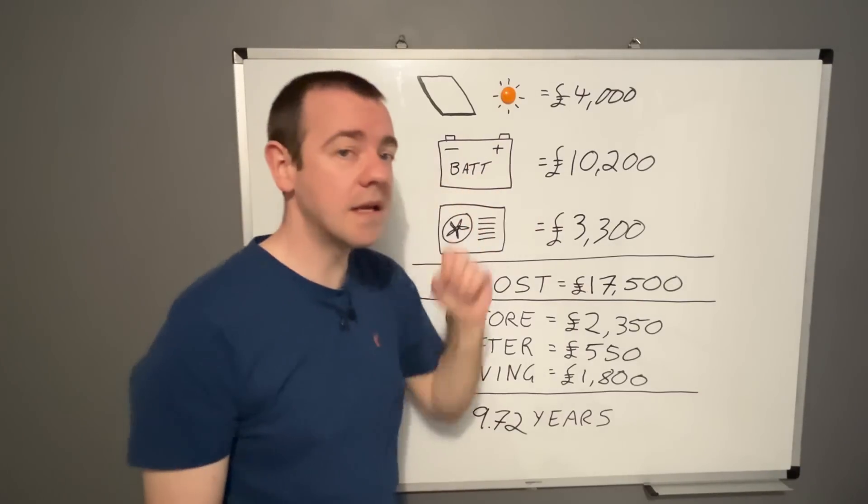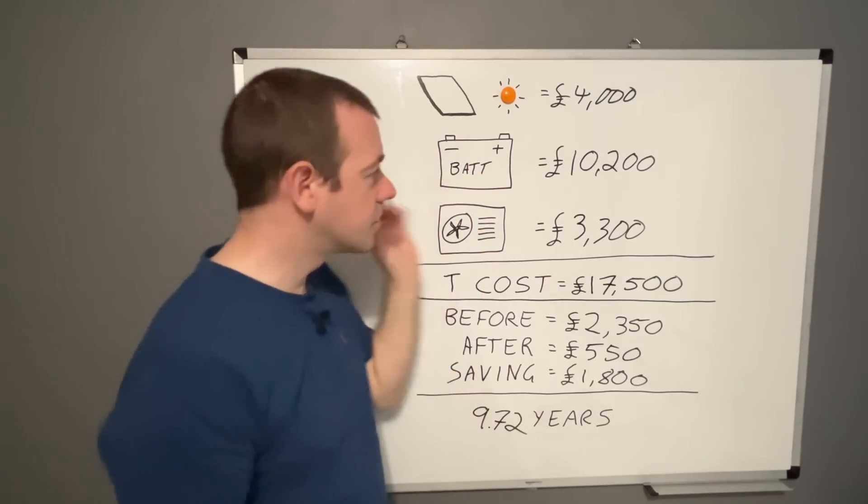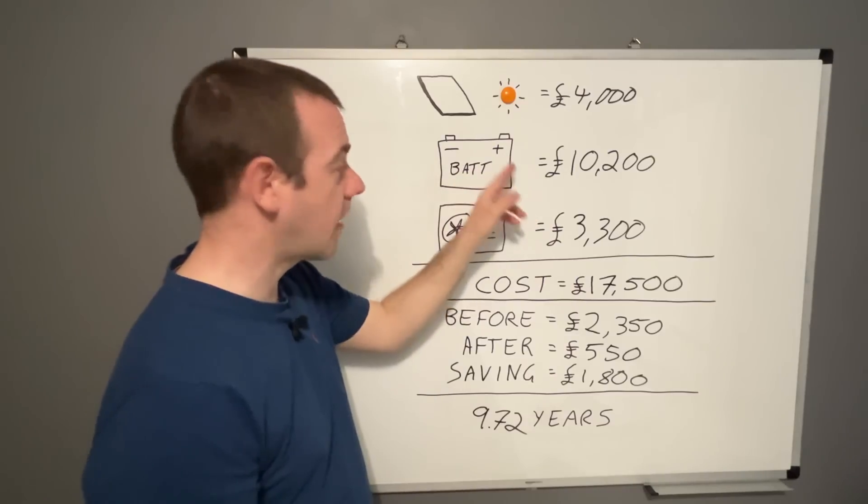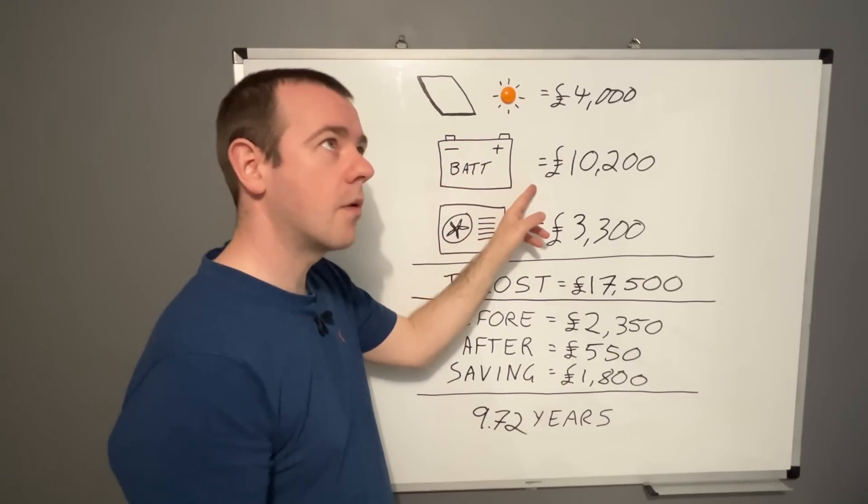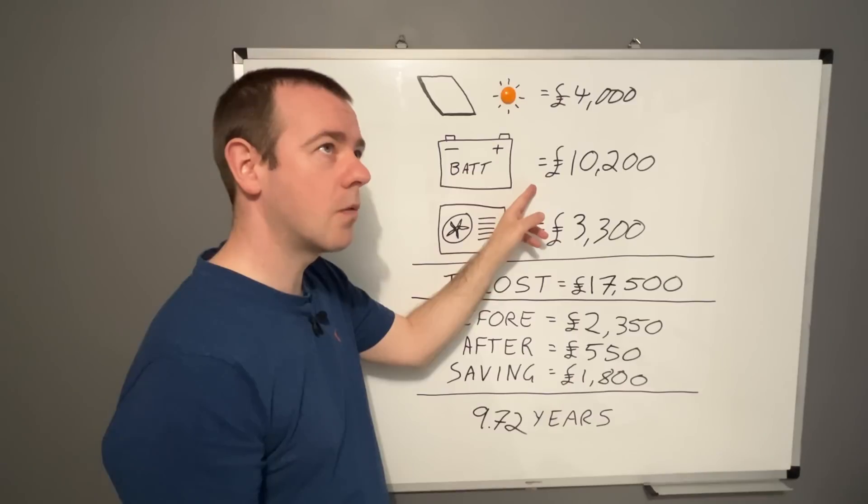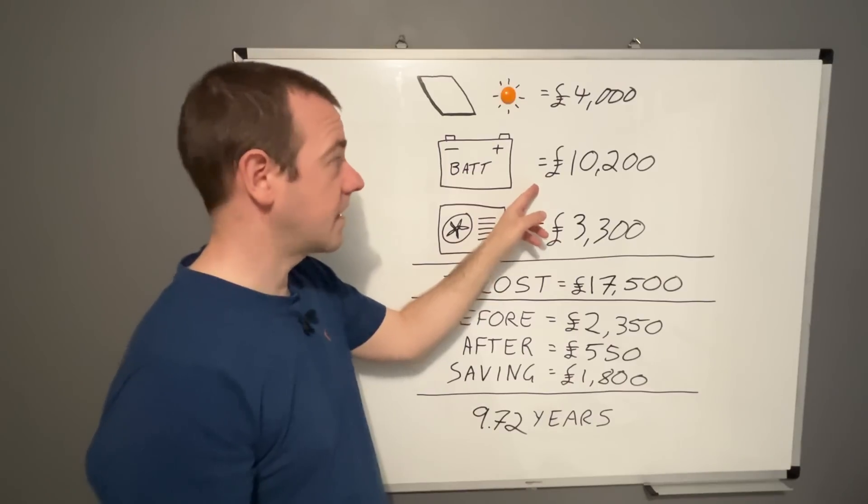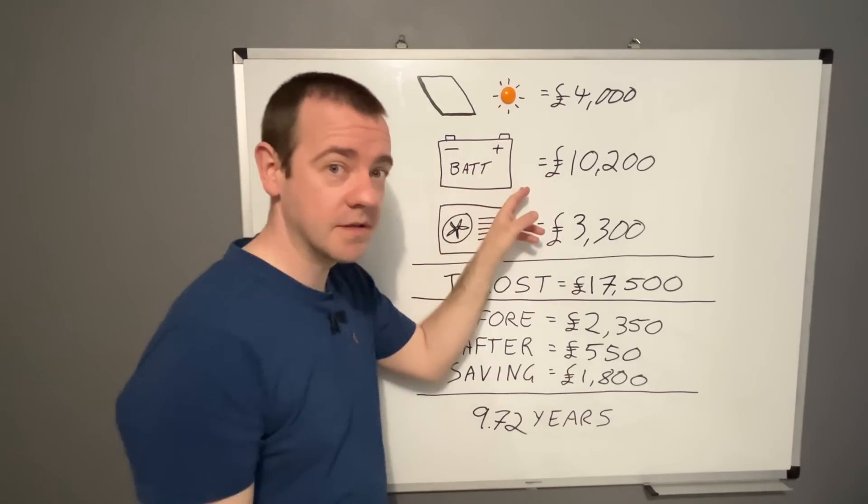And that's based on my GiveEnergy battery system. There's another battery system out there right now that you could get a 20.8 kilowatt hour battery version of with a six kilowatt hybrid inverter. So effectively what I have now, and that would be half that price.